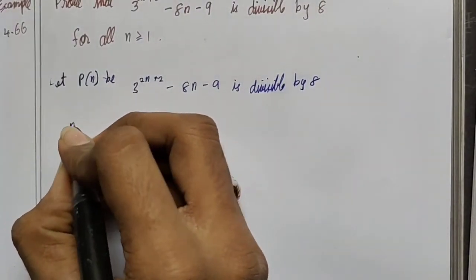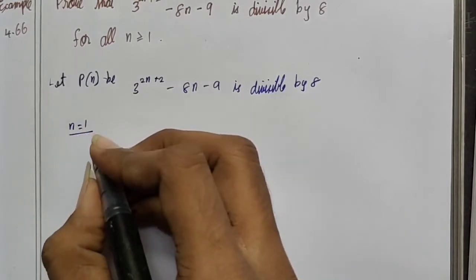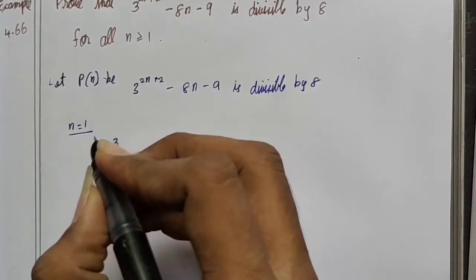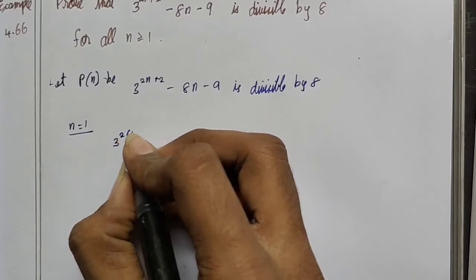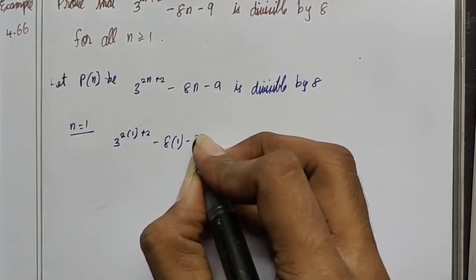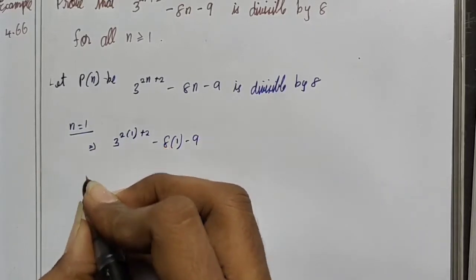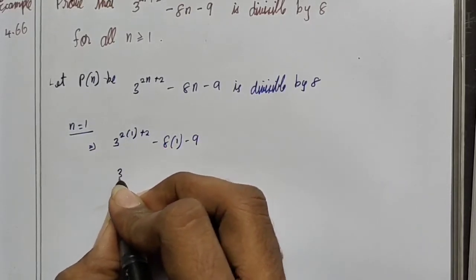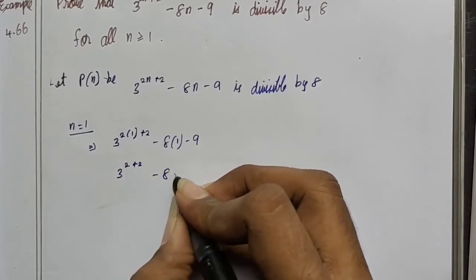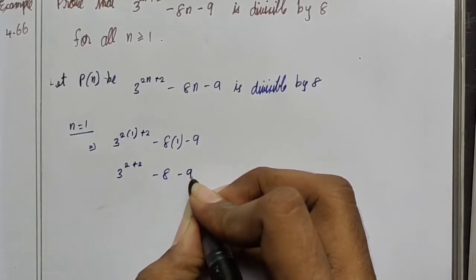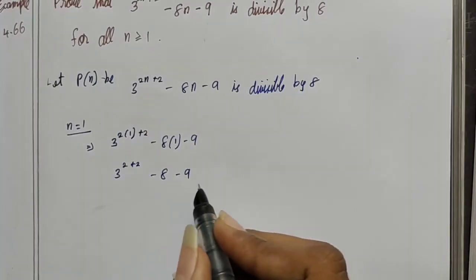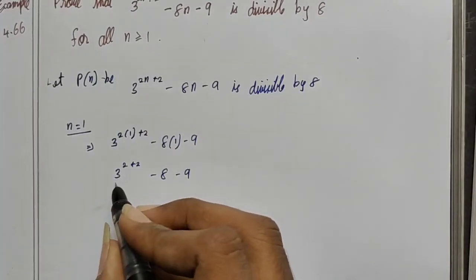Step 1: n equal to 1. We write it in this form: 3 power 2 into 1 plus 2, minus 8 into 1, minus 9. Which implies 3 power 2 plus 2, minus 8, minus 9. That is 3 power 4, which is 3 square into 3 square.